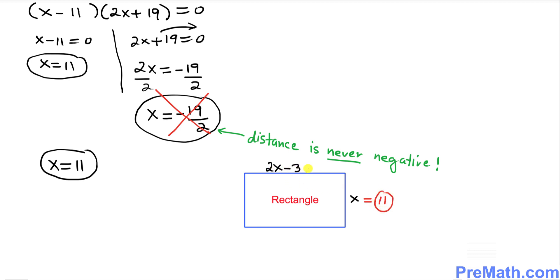Now we're going to figure out the other side. So we can figure out the other side, the distance, the length of the other side by simply applying this x equals 11 over here.